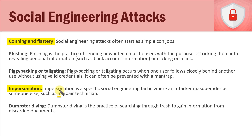One type of social engineering attack we'll also cover later in this course is phishing. Phishing is a way to send a fraudulent email with the purpose of tricking somebody into revealing personal information, such as bank account details. For example, you may get an email with something urgent that requires a response by a deadline, and they get you to click a link. It looks like your bank, but if you look at the URL it's not your bank's URL. They try to get you to log in, and when you do, you provide them your bank credentials — your username and password.